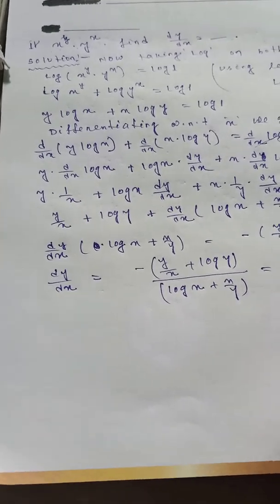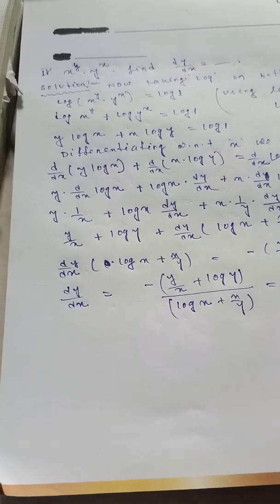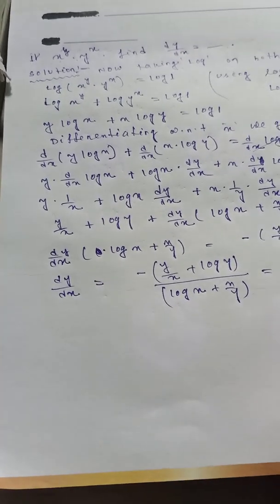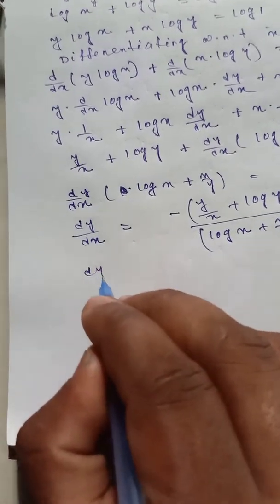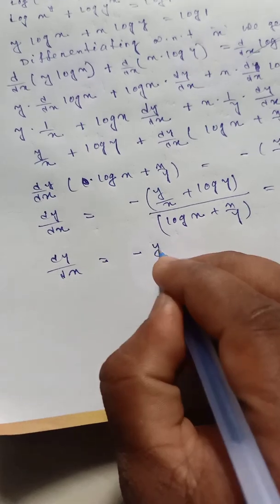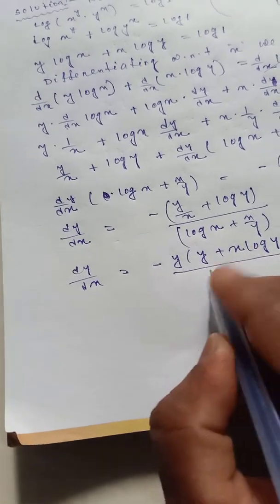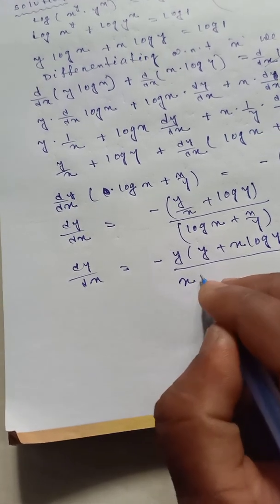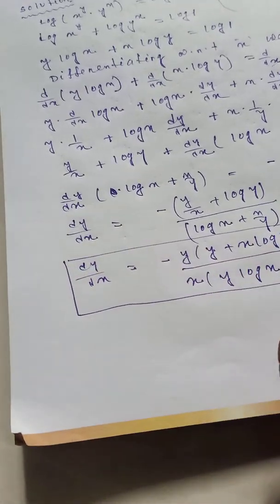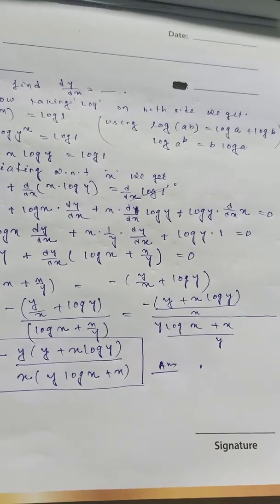So dy/dx equals minus (y plus x·log y) divided by x, all divided by (y·log x plus x) divided by y. The final result is dy/dx equals minus y(y plus x·log y) divided by x(y·log x plus x).